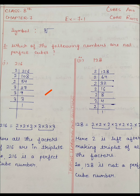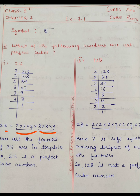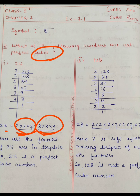216 का prime factorization: 216÷2=108, 108÷2=54, 54÷2=27। 27 को 2 से divisible नहीं है, तो 3 से: 27÷3=9, 9÷3=3, 3÷3=1। तो prime factors मिले: 2 तीन times और 3 तीन times। क्योंकि हमें यह find करना है कि यह perfect cube है या नहीं, इसके लिए triplets बनाने होते हैं।